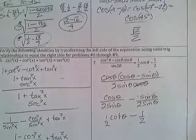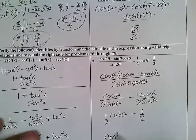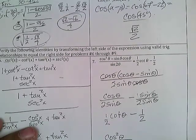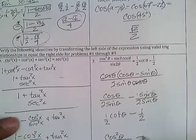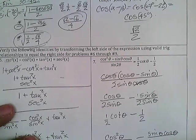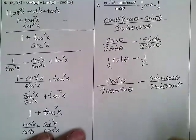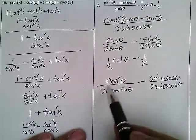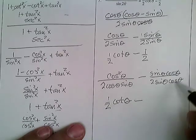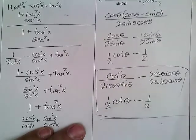This is ½ times cotangent θ. Some people did it differently: they left it as cos²θ over 2cosθ·cosθ minus sinθ·cosθ over 2sinθ·cosθ. Then they canceled one cosine here and got ½ cotangent θ minus ½. There are other ways to do it as well.